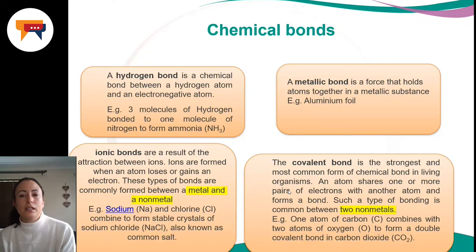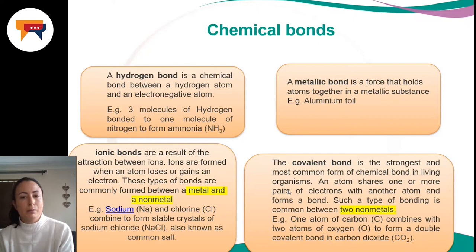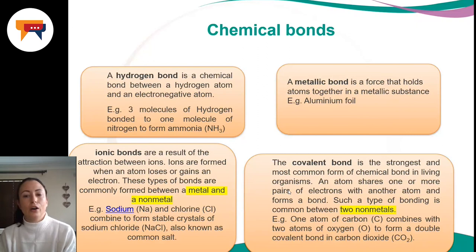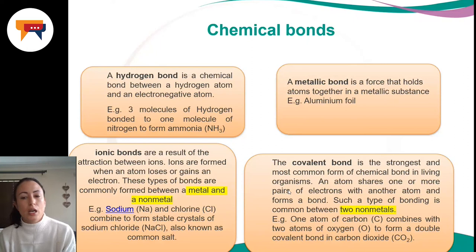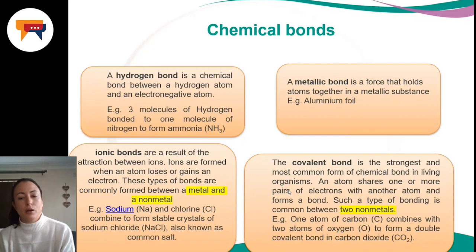A metallic bond is a bond that holds atoms together in a metallic substance. For example, in aluminium foil, the individual aluminium atoms are bonded to each other through a metallic bond. Then there is the covalent bond — the ionic and covalent bonds are most frequently tested because they are quite contrasting. A covalent bond is between two nonmetals and is the strongest and most common form of chemical bond in living organisms. An atom shares one or more pairs of electrons with another atom. For example, one atom of carbon combines with two atoms of oxygen to form a double covalent bond in carbon dioxide.